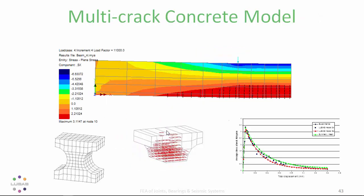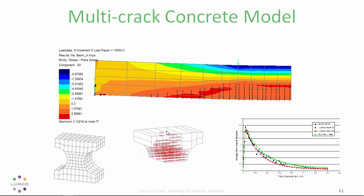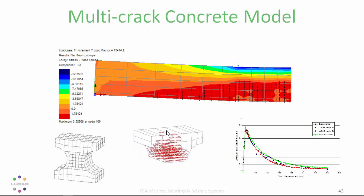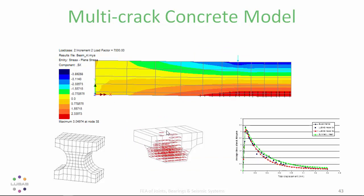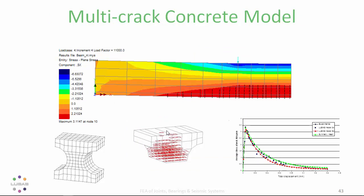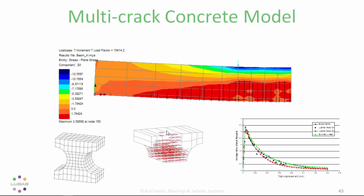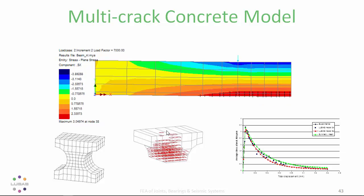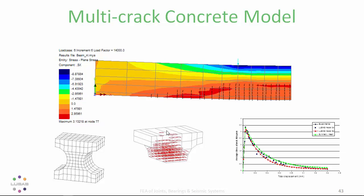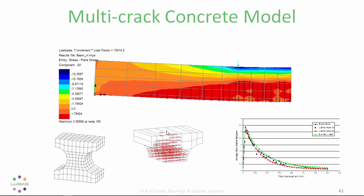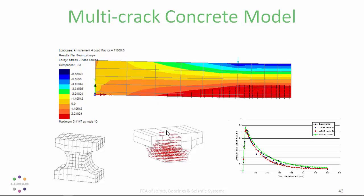This analysis used the LUCIS concrete cracking and crushing material model — probably one of the most advanced non-linear concrete material models in the world today. Validated against extensive experimental data, it includes cracking, crushing, aggregate interlock, and remembers unloading and reloading. It also gives predicted crack widths under load.